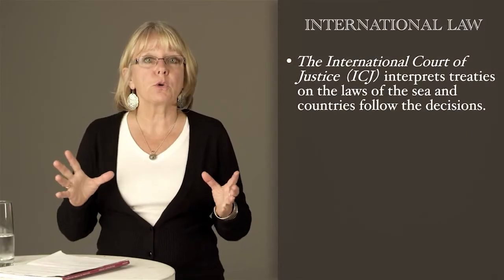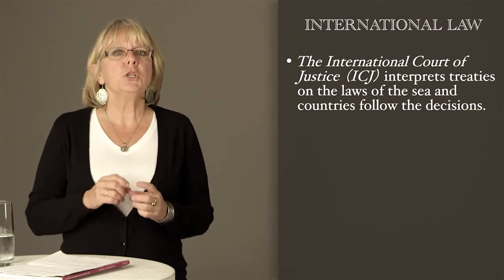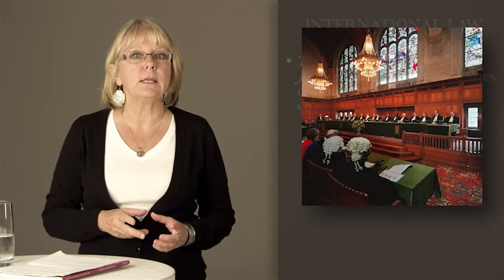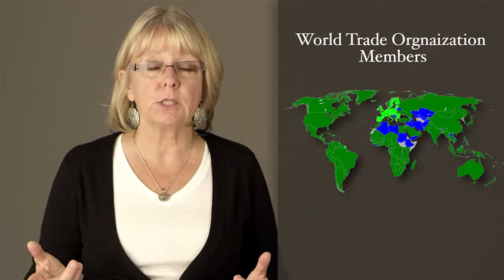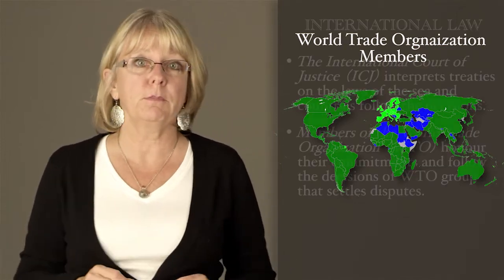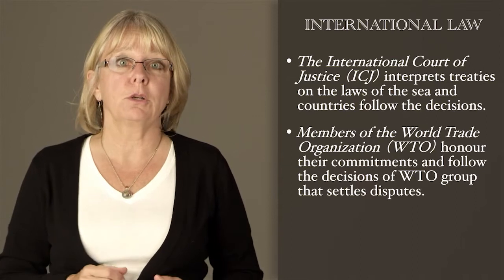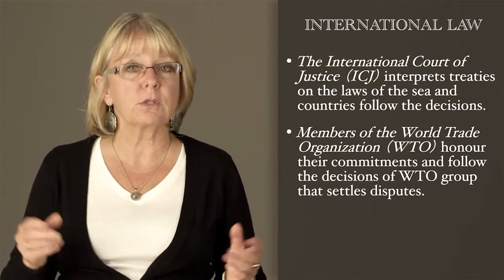Let's look at some examples of effective working of international law. The International Court of Justice, the ICJ, interprets treaties on the laws of the sea, and countries follow those decisions. Also, members of the World Trade Organization, the WTO, honor their commitments and follow the WTO's dispute settlement decisions. Why do countries surrender some of their sovereignty and agree to hand over cases to international courts? There are many reasons. A country probably entered into a treaty because it was a good idea, and if the country lives up to its promises, other countries are more likely to do the same.